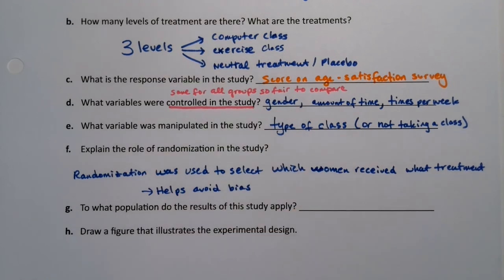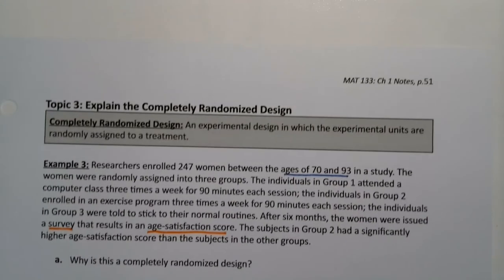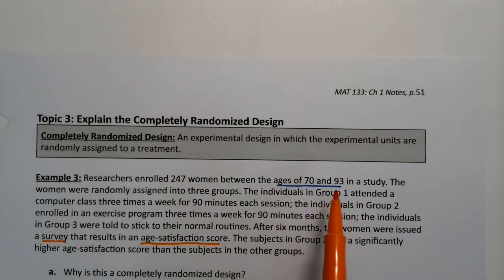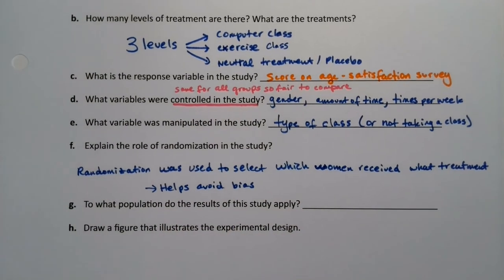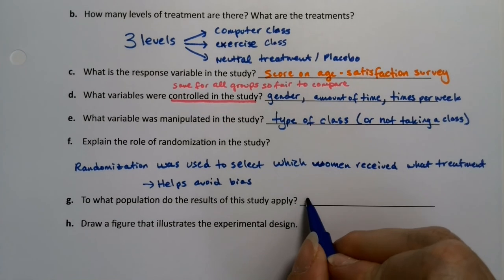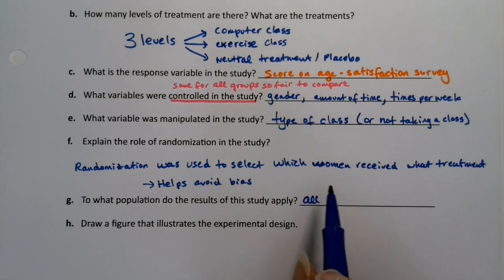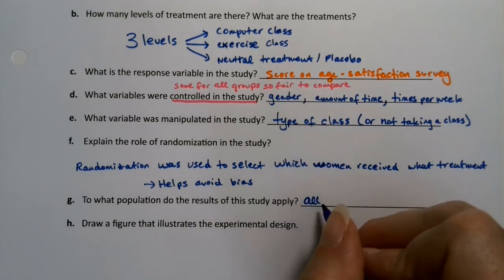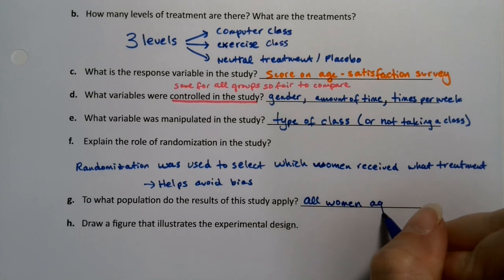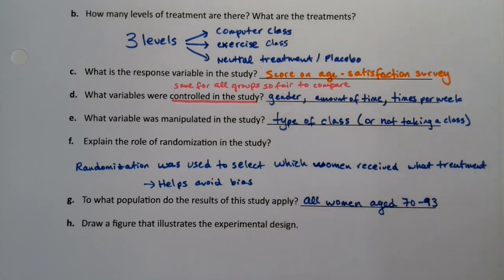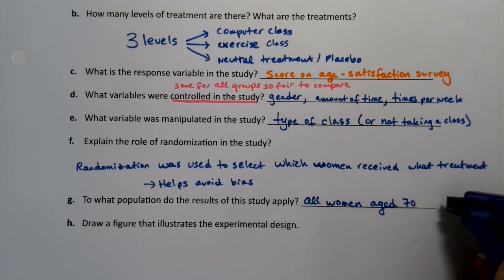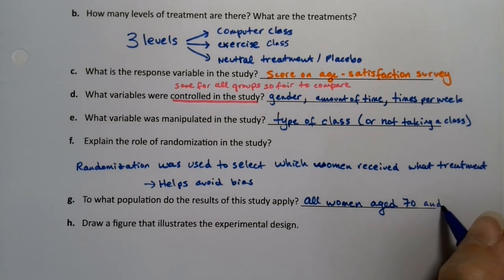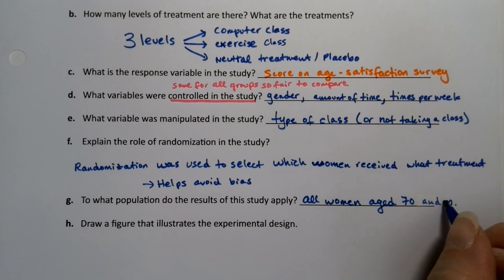To what population do the results of the study apply? Well they're obviously trying to talk about women age 70 to 90. So maybe all women age 70 to 90. You could maybe argue all people age 70 to 90. Usually they stop it and just make it one gender to control for gender differences but I would say it's fair to say all women aged 70 to 93. Honestly 93 might just be who the oldest person was so let's say 70 and up I think that's fair.